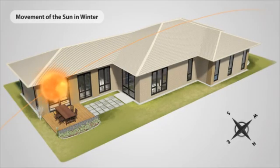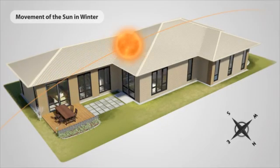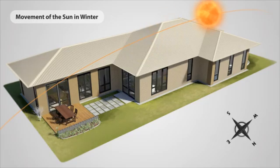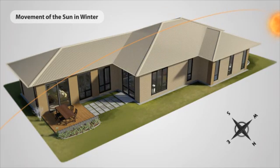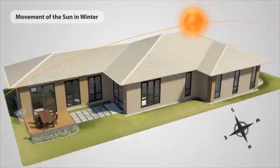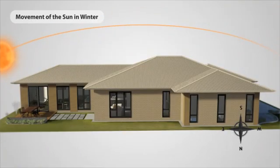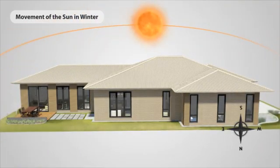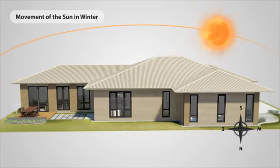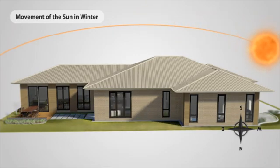In winter the sun is lower in the sky. This means that the sun can penetrate through the windows to the interior of the home, creating heat gain and reducing the need for artificial heating. In this view you can see the sun penetrating into the living area and warming the home.